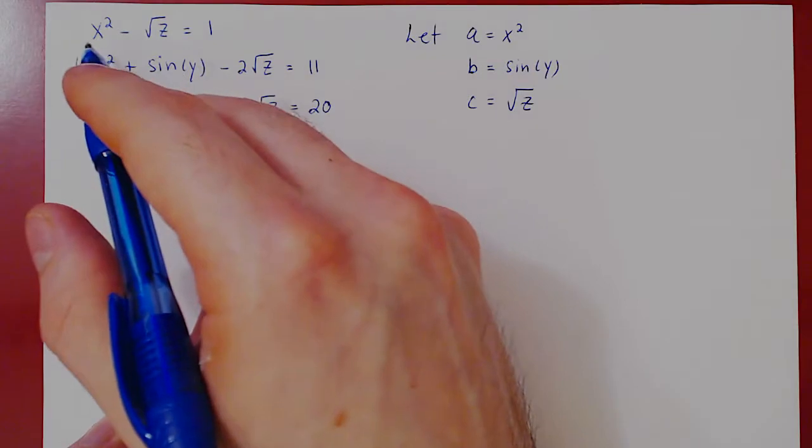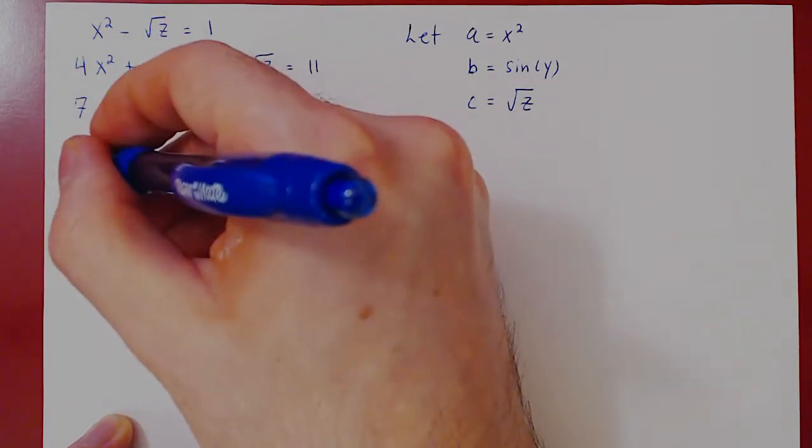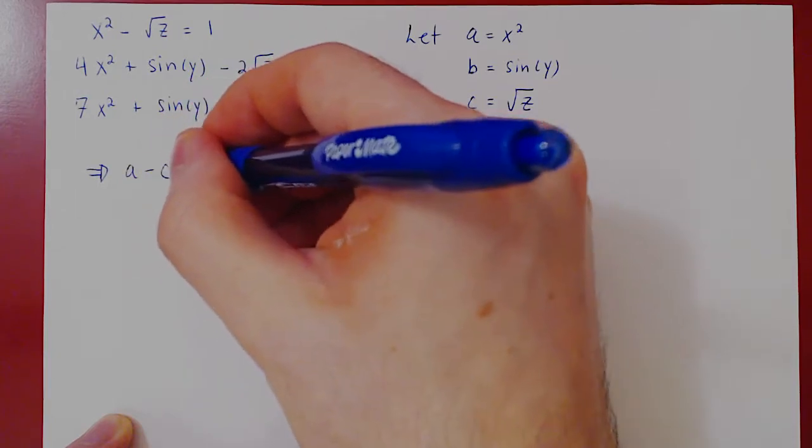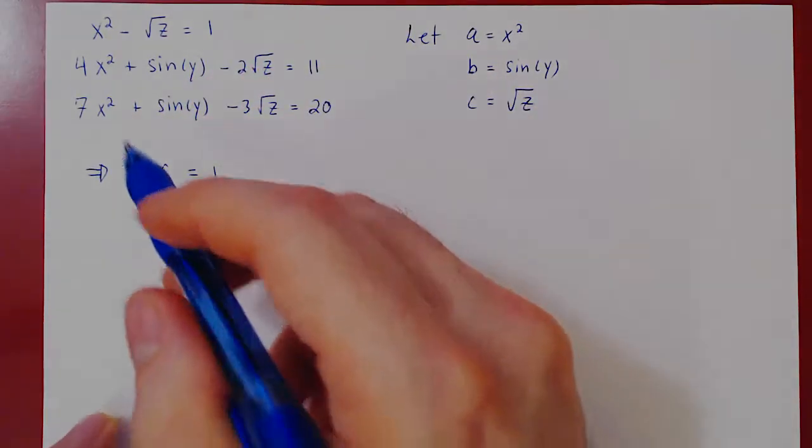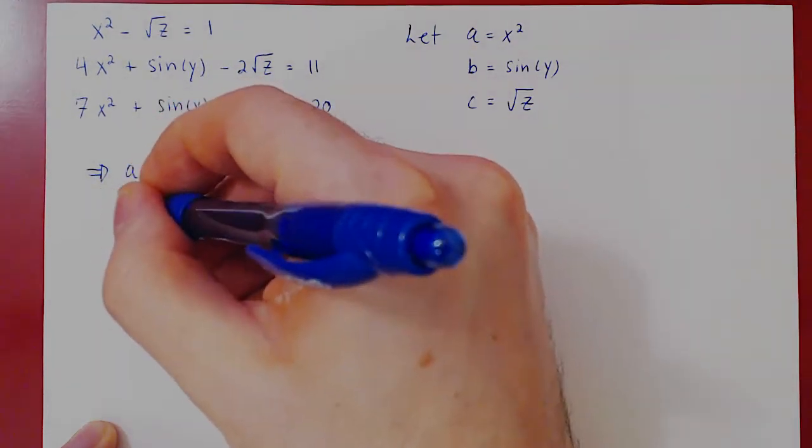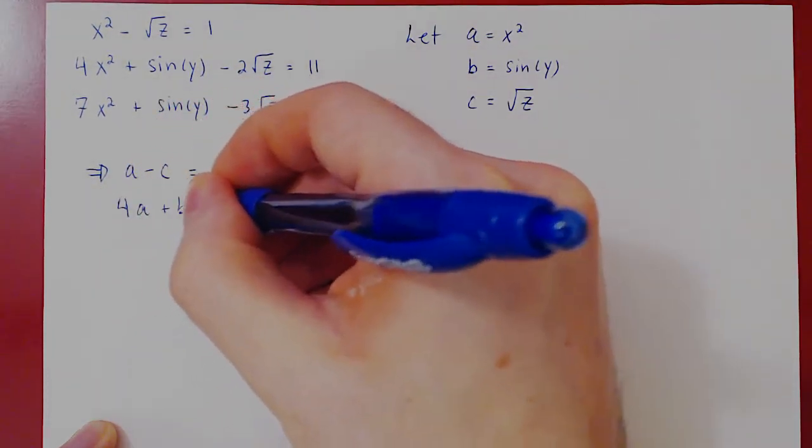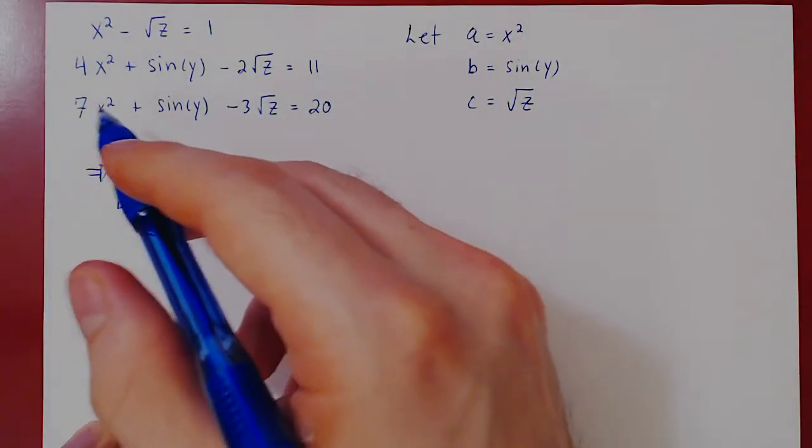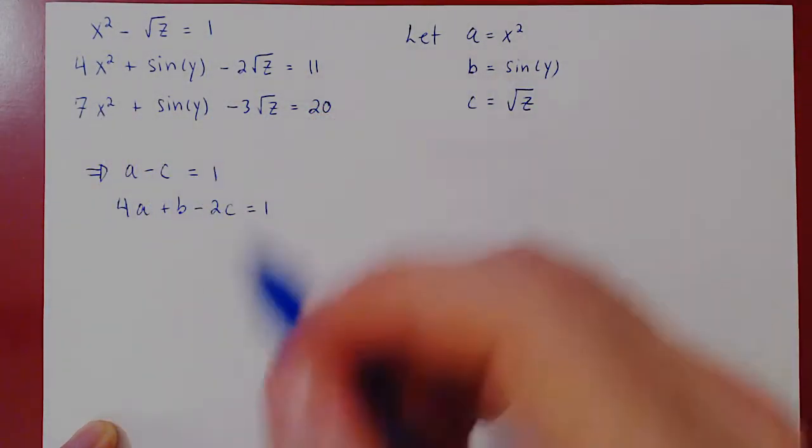Well, the equation becomes a minus c equals 1. The second equation becomes 4a plus b minus 2c equals 11. And the third equation becomes 7a plus b minus 3c equals 20.